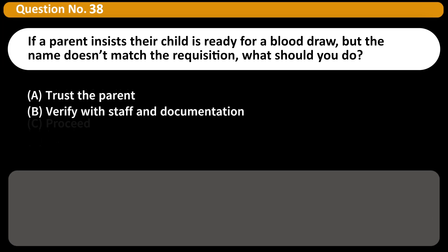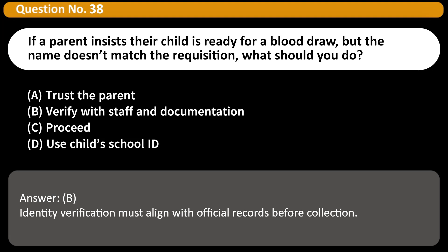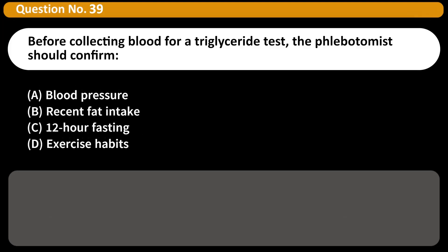If a parent insists their child is ready for a blood draw, but the name doesn't match the requisition, what should you do? A. Trust the parent. B. Verify with staff and documentation. C. Proceed. D. Use child's school ID. Answer: B. Identity verification must align with official records before collection.